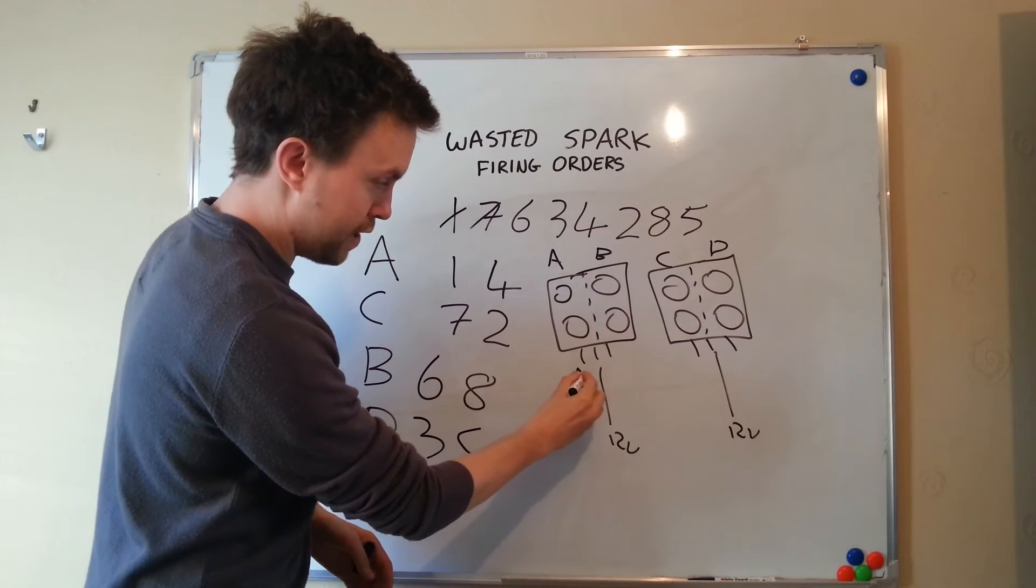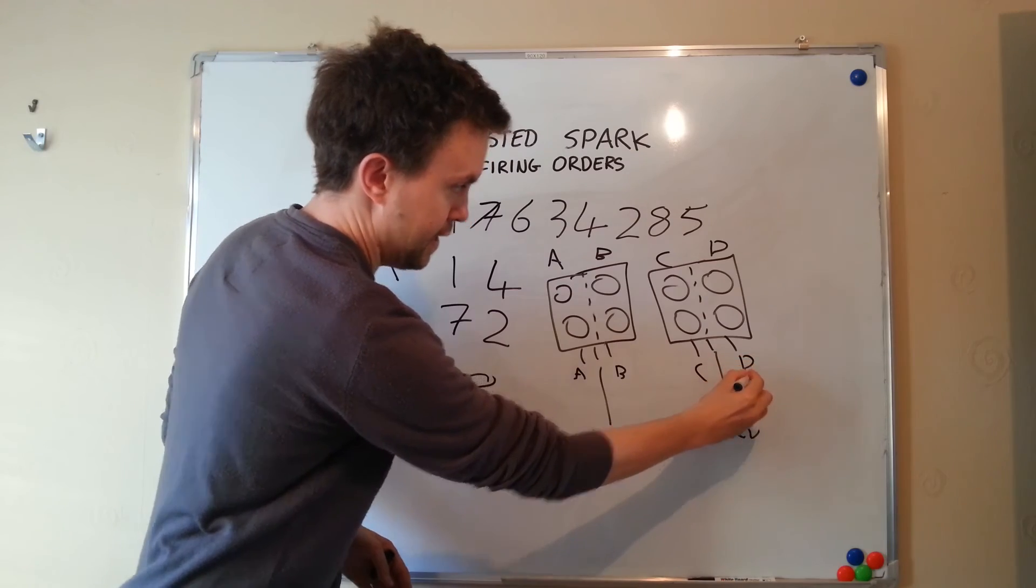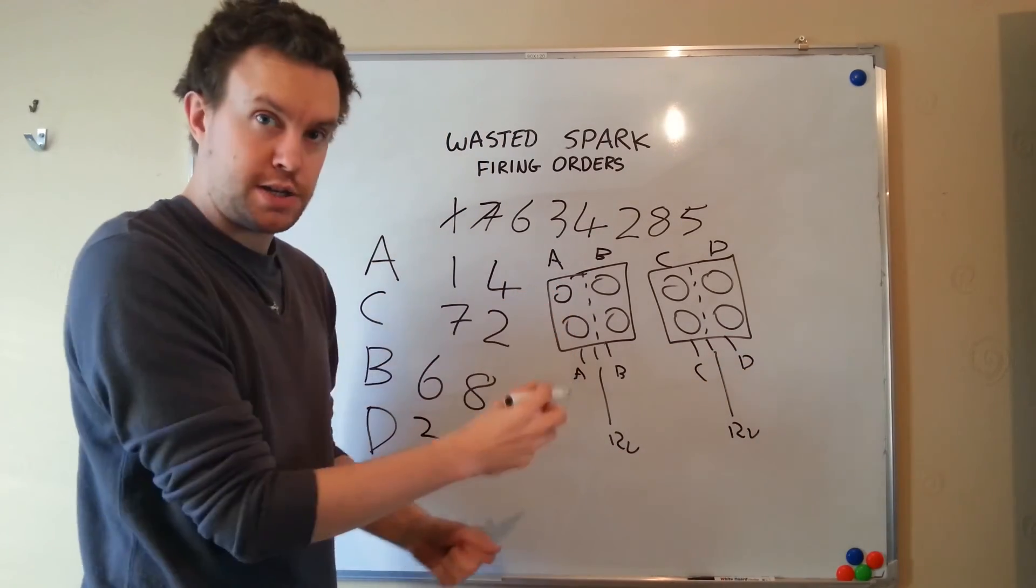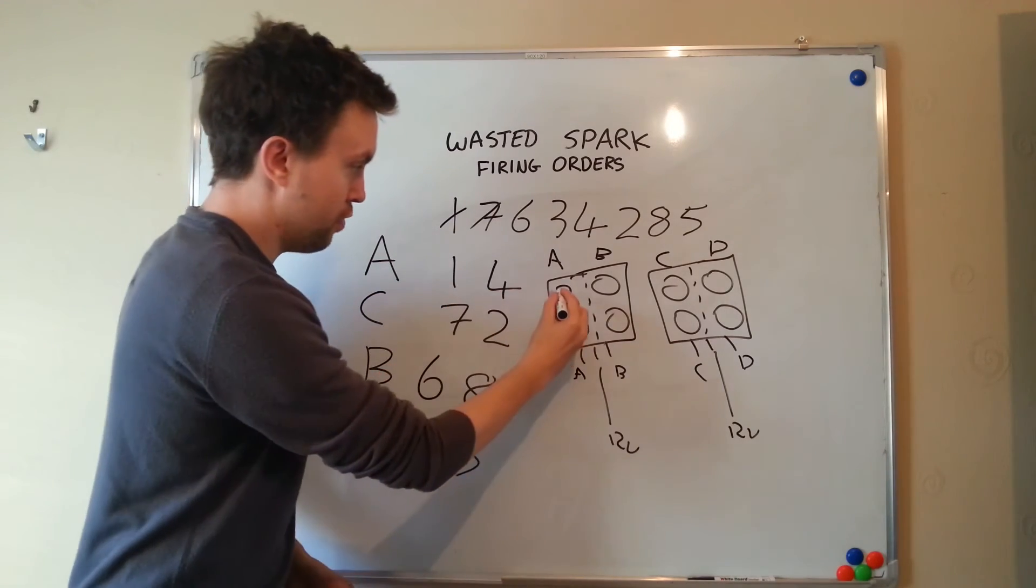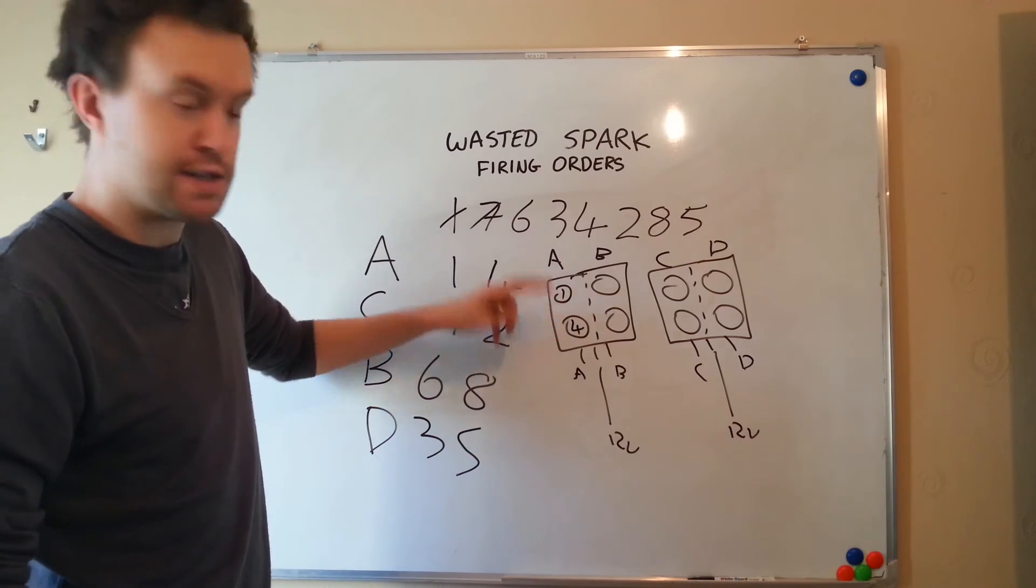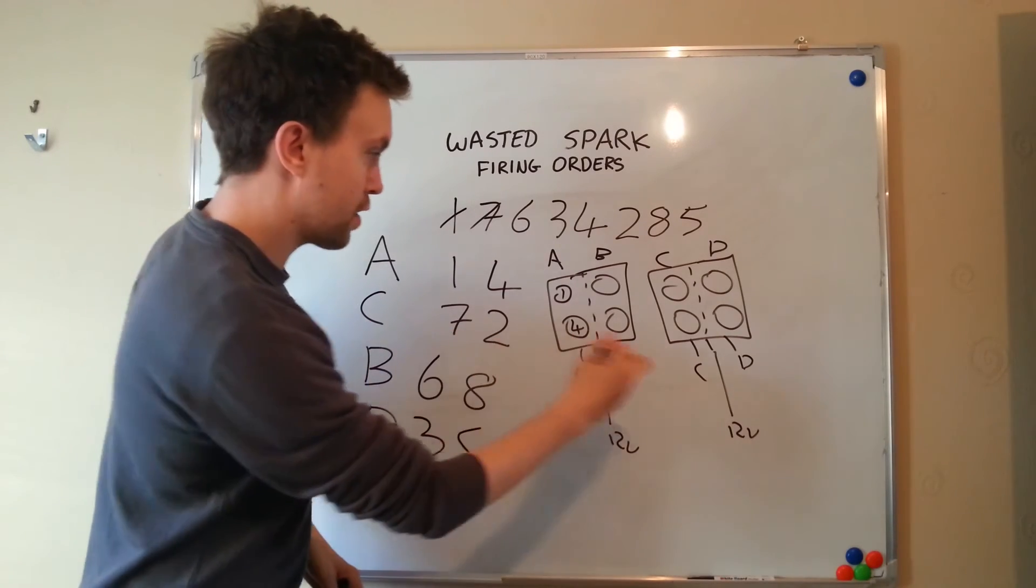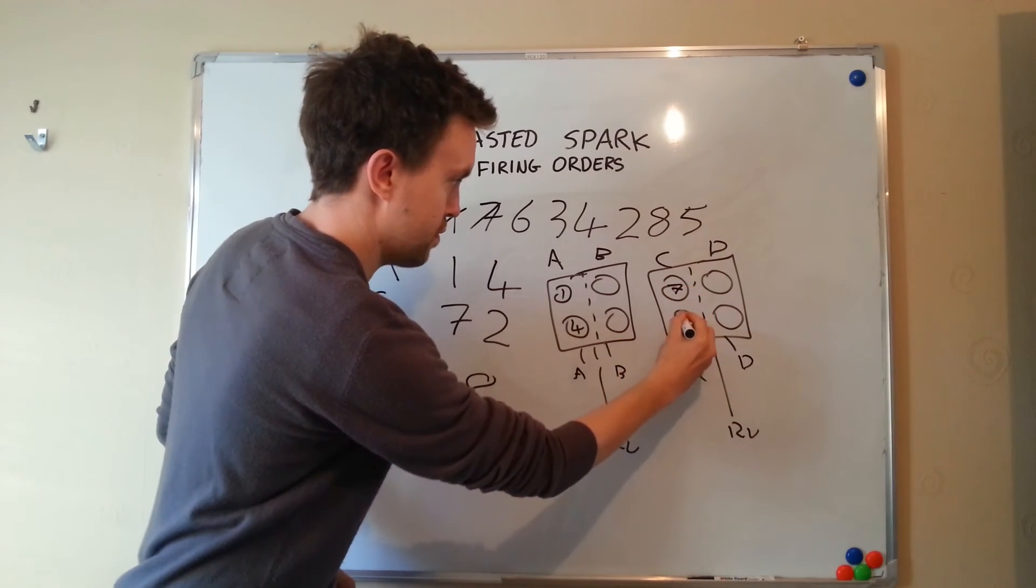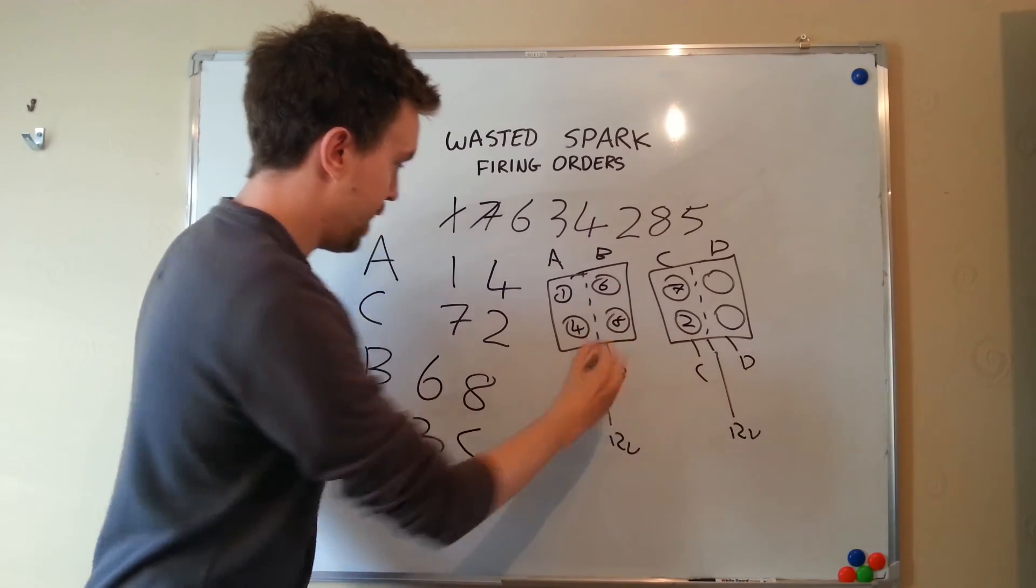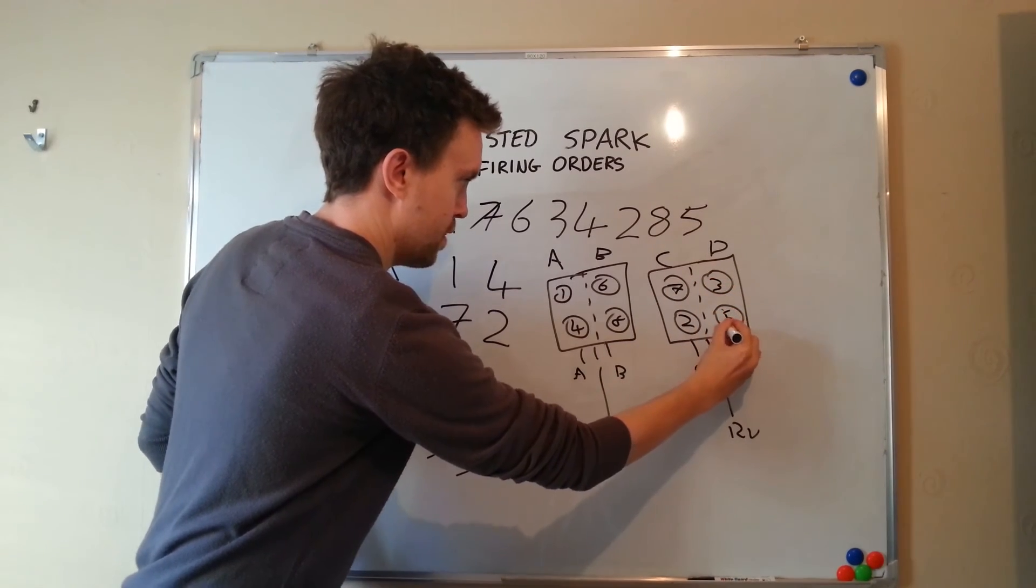We can then go A wires into here, B into here, C into here, and D into here. And we can then write on here what our HT leads and the plugs they should be connecting to. So A needs to go to one and four. One and four. And remember, these two can be swapped over. We can have four at the top and one at the bottom. It doesn't matter as long as they're within the same banked coil. Coil C goes to seven and two. Coil B goes to six and eight. And coil D goes to three and five.